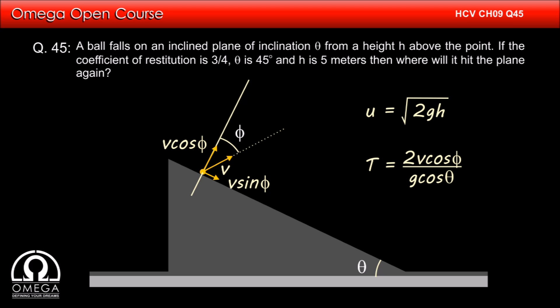The time of flight for the projectile is 2v cos φ / (g cos θ) which equals 2eu cos θ / (g cos θ), that is 2eu/g.